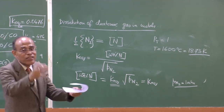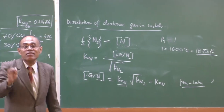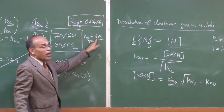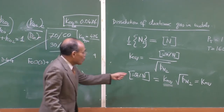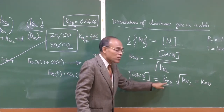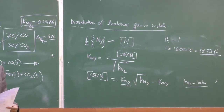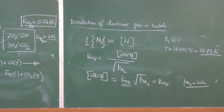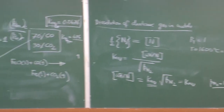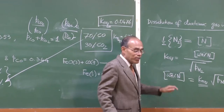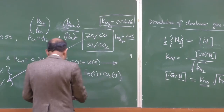The Sievert's law constant of 476 ppm tells us that when steel is in contact with pure nitrogen at 1 atmosphere at 1600°C for a very long time, the dissolved nitrogen will approach 476 ppm. If P_N₂ = 0.79 atm (as in air, where nitrogen is 79%), you can calculate the corresponding dissolved nitrogen content in steel. We will continue with one or two more thermodynamic problems — chemical thermodynamics calculations — in the next lecture.